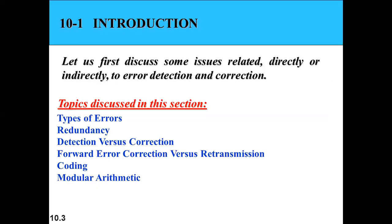Let us first discuss some issues related directly or indirectly to error detection and corrections — types of errors, redundancies, detection versus correction, and coding schemes. These are all things we need to discuss here.